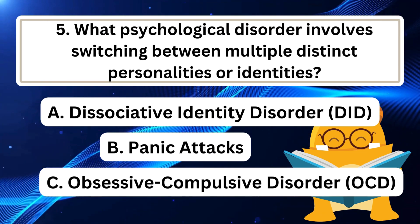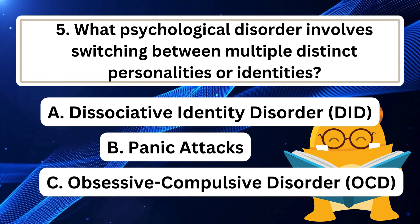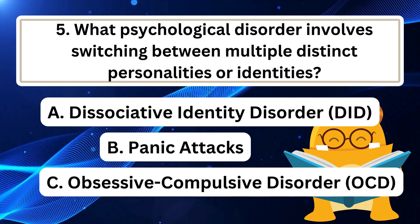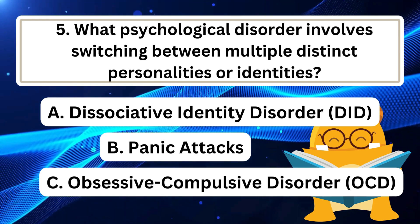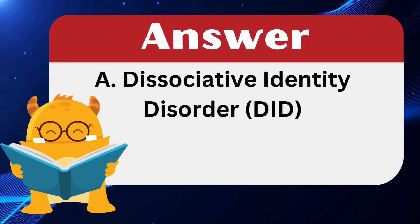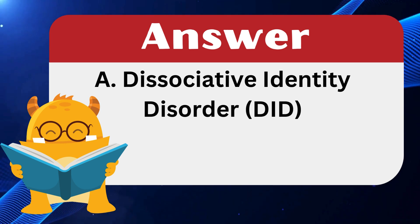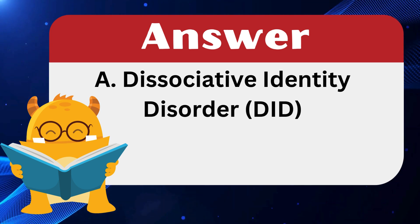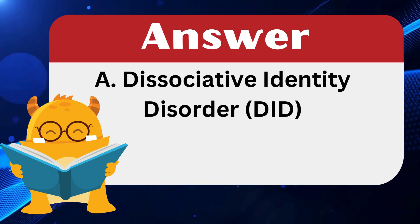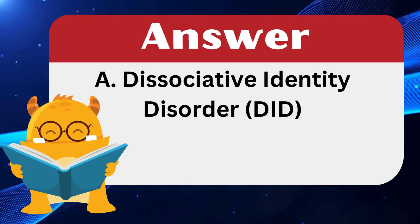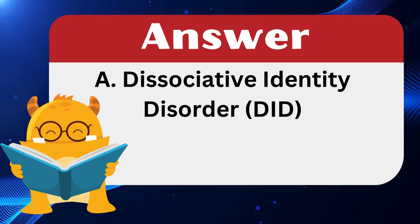Question 5: What psychological disorder involves switching between multiple distinct personalities or identities? The answer is A: Dissociative Identity Disorder (DID), commonly known as multiple personality disorder. It involves an individual dissociating from their true identity and experiencing distinct and separate personalities or identities that control their behavior. Panic attacks involve episodes of intense anxiety, while OCD involves unwanted thoughts leading to specific actions to alleviate anxiety.